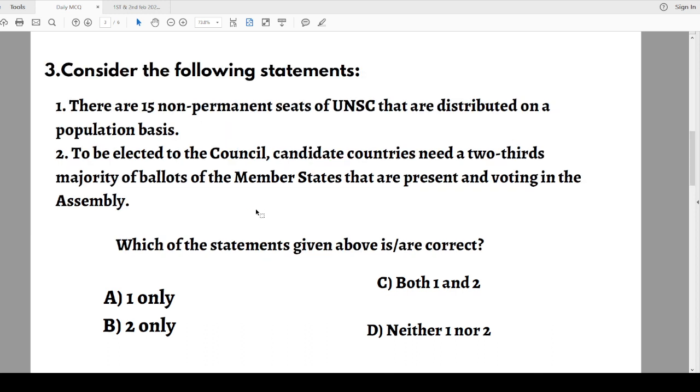Question three: Consider the following statements. Statement one: There are 15 non-permanent seats of UNSC that are distributed on population basis. Statement two: To be elected to the Council, candidate countries need two-third majority of ballots of member states that are present and voting in the Assembly. Which statements are correct? Options: 1 only, 2 only, both, or neither.